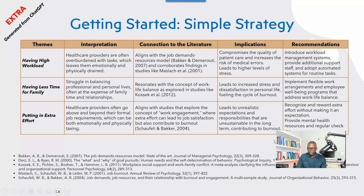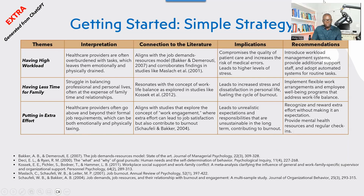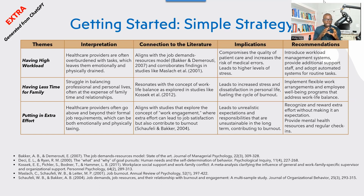Another option is that you can use AI to help you work on your discussion — not to write it, but to generate ideas that will help you get started. So it's for idea generation only. You can use ChatGPT to do that, asking it to help you come up with ideas about each of the sections based on the themes that you have.